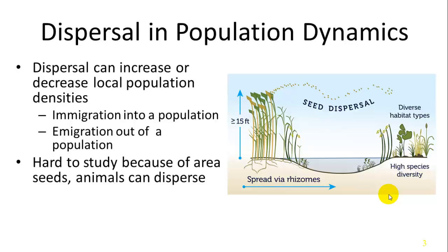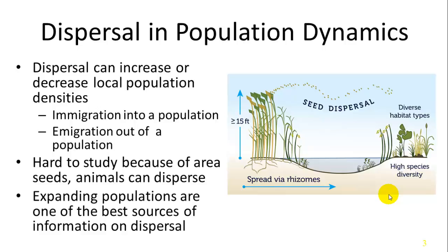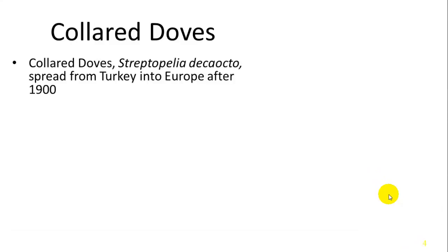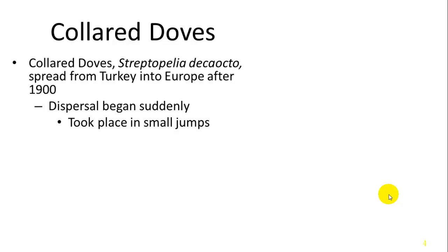Animals generally move very long distances, and it's hard to figure out where they came from. So expanding populations are one of the best sources for study of dispersal. Another example is collared doves, which are endemic or naturally found in Turkey. In the 1900s, they started to disperse and increase their range. It began suddenly but took place in small jumps.